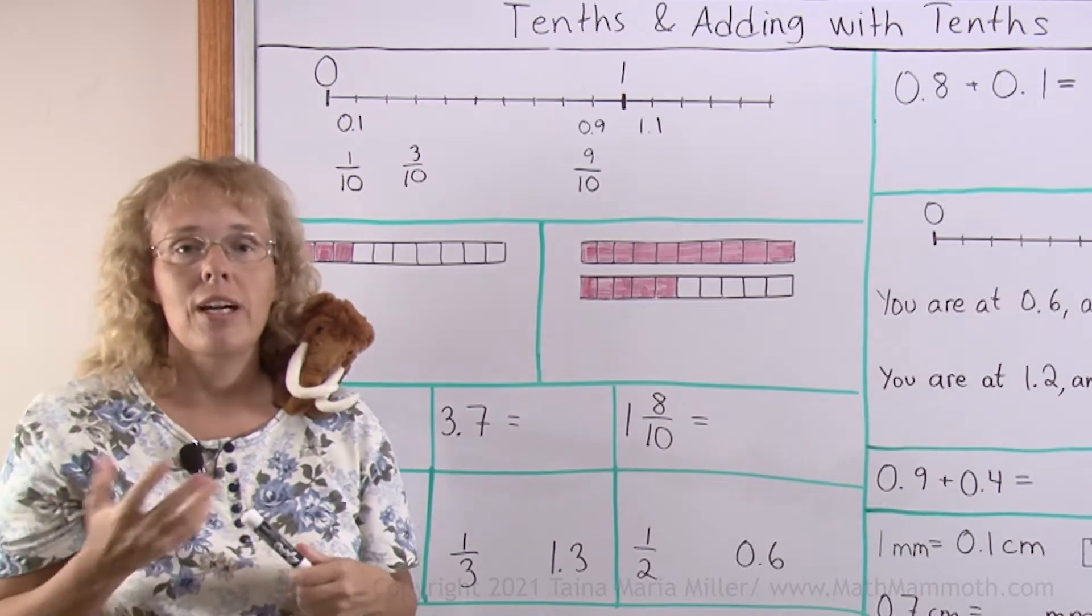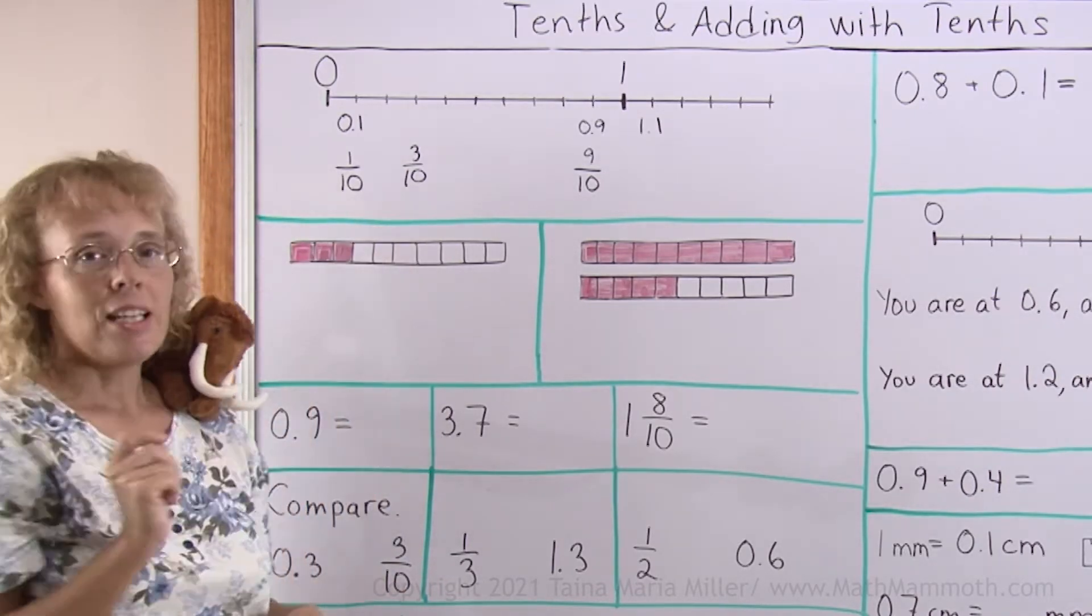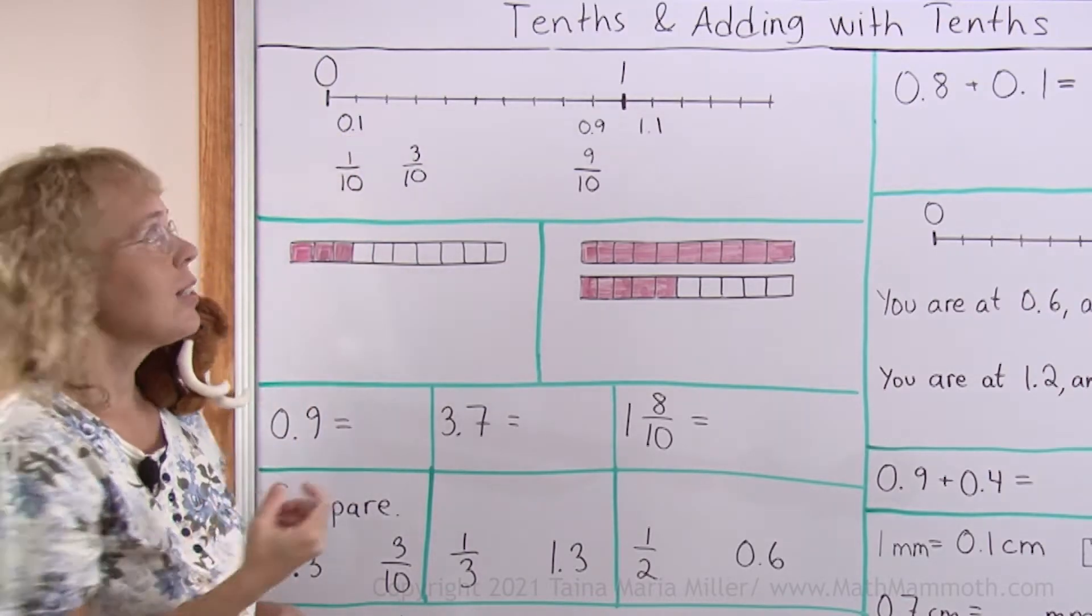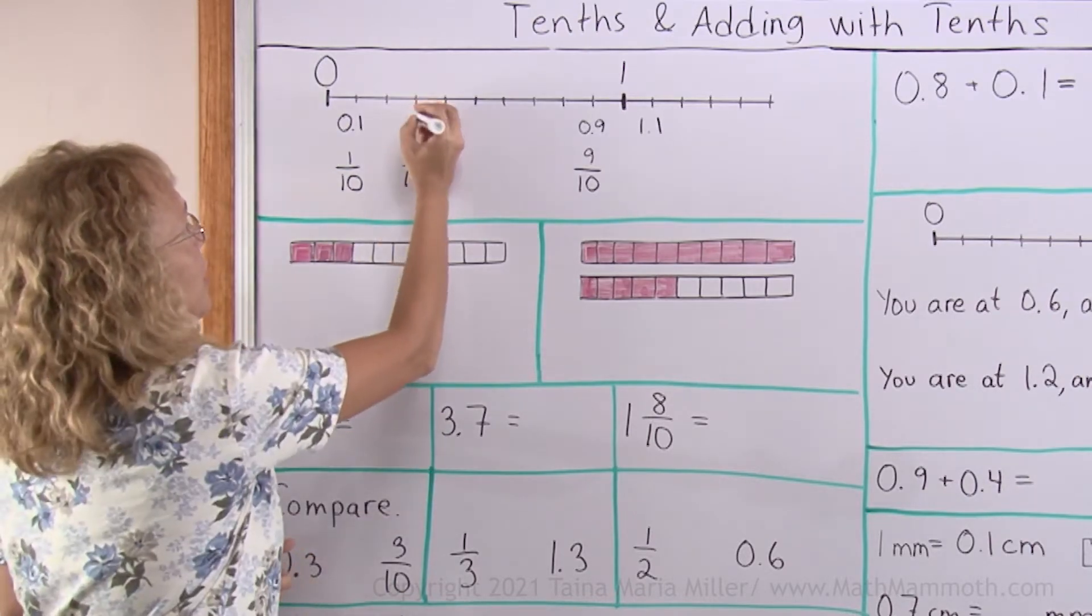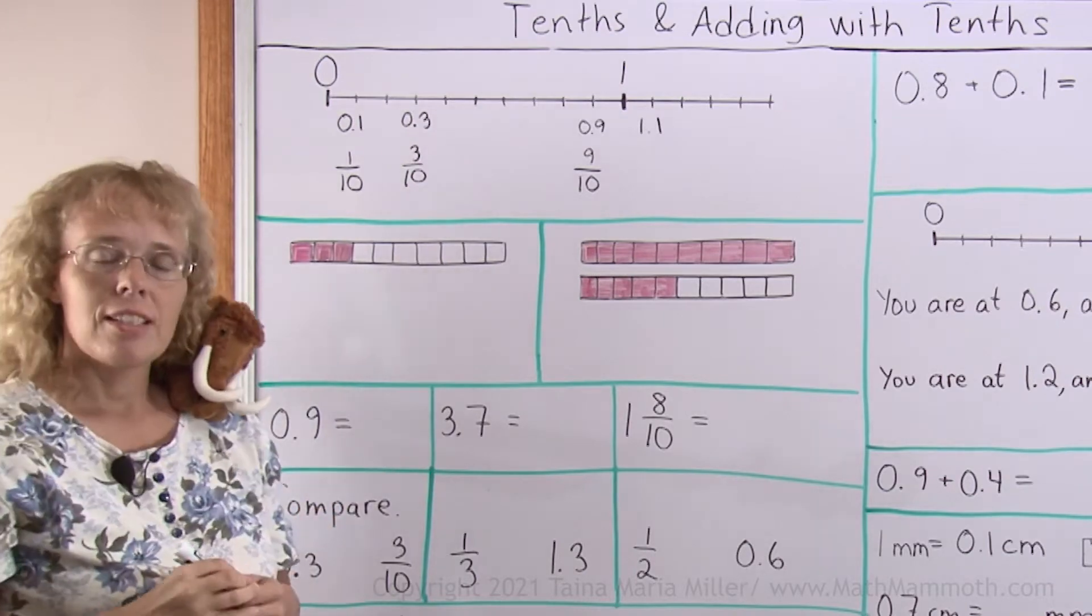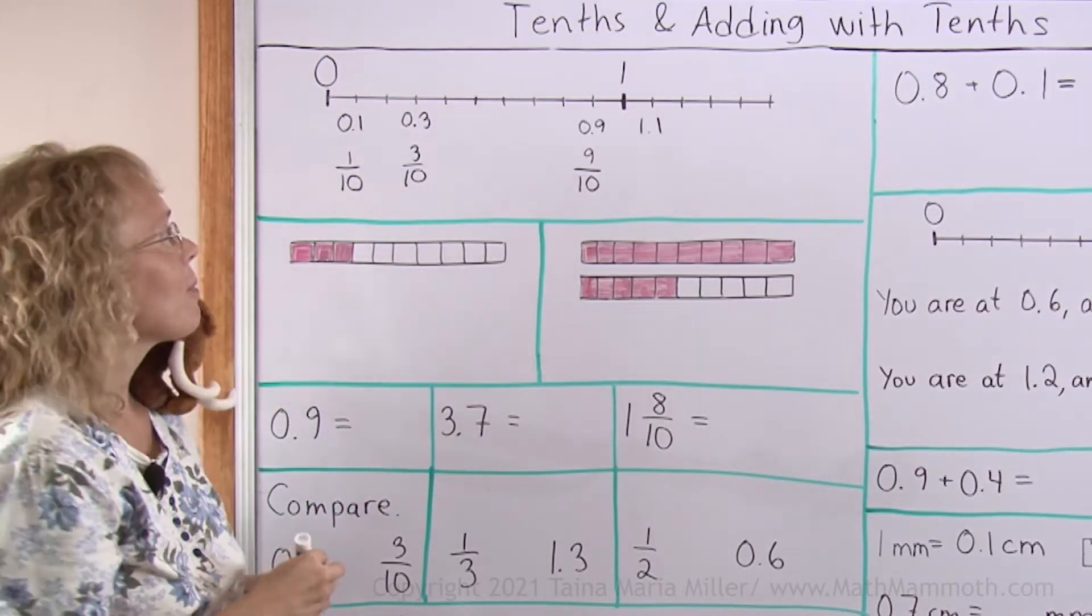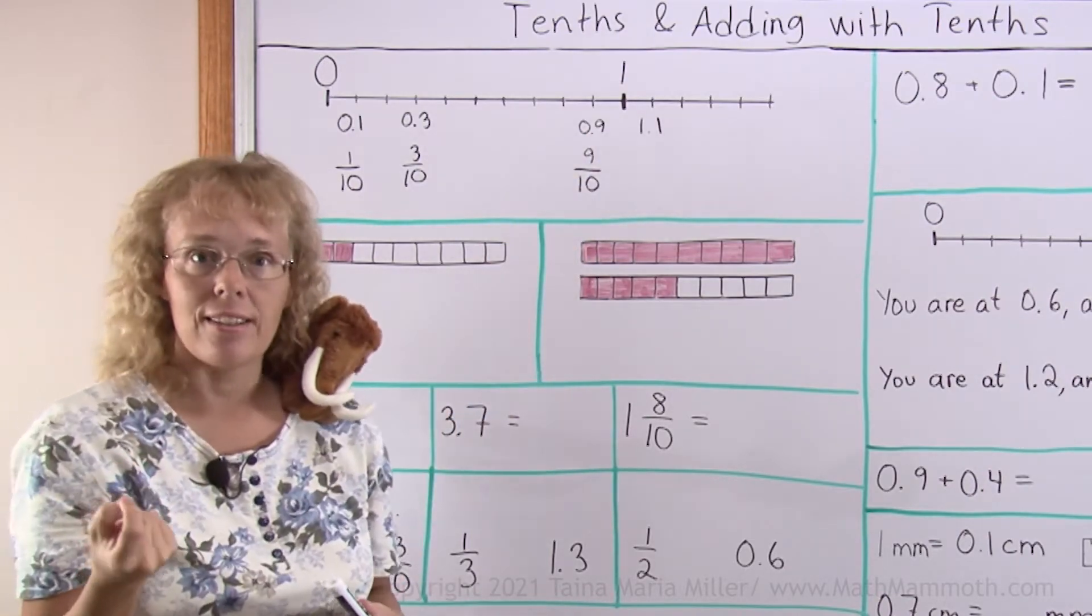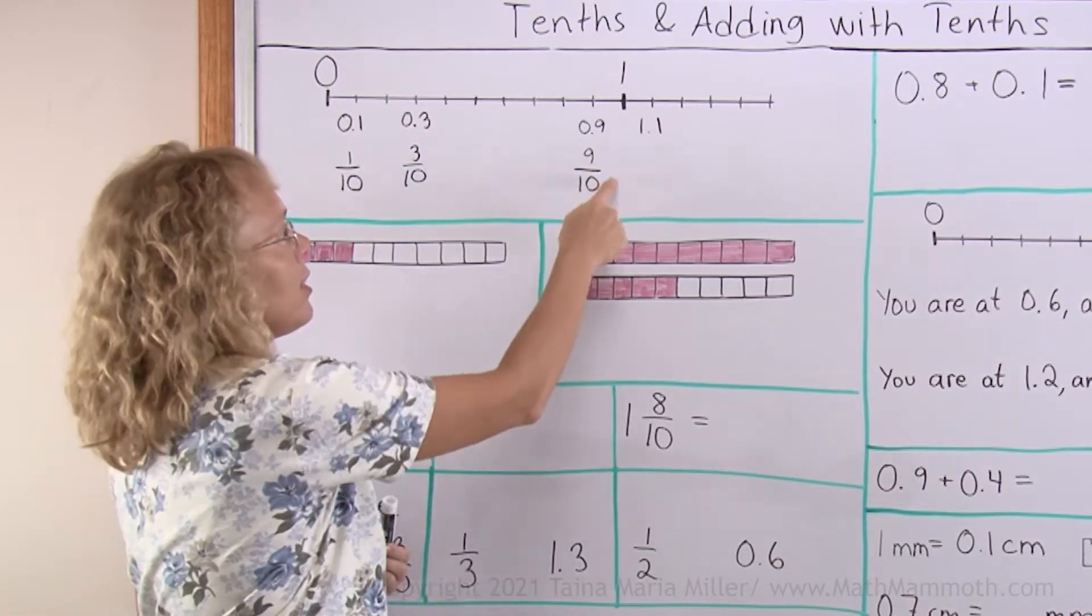There's also another way to write fractions that have tenths or 10 as a denominator, and that is using decimal numbers. This decimal number is 0.1, which is 1 tenth. And 3 tenths as a decimal we write 0.3. After the decimal point comes a number that means how many tenths there are. Here for example is 0.9, which is 9 tenths. It is just another way of writing the fraction 9/10.